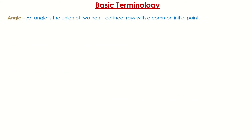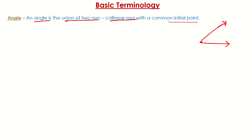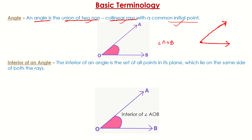Now let us talk about some basic terminology of angles. An angle is the union of two non-collinear rays — that means two rays which are different and intersect at a common initial point. So an angle is formed by two rays that start from a common initial point. OA and OB are the rays, and this is the representation of angle AOB.